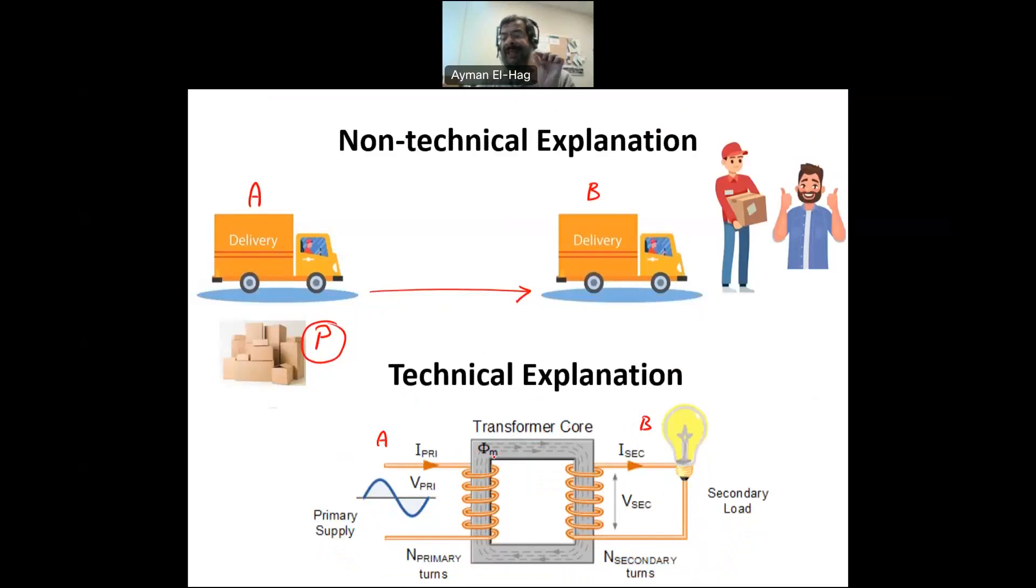To do that, we have to set the flux in the core. Without a flux in the core, you cannot transfer the energy from point A to point B. So the reactive power is actually the amount of flux, magnetic field, that you consume in the core of the transformer, so that you can take the power from point A to point B. So the flux by itself, as we will see also in the next example, could be useless, but here it is needed to move the power from point A to point B.